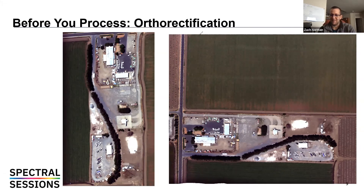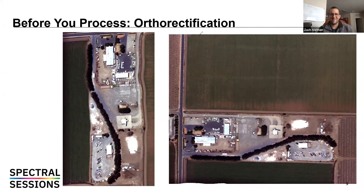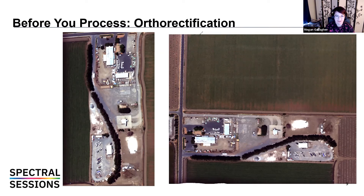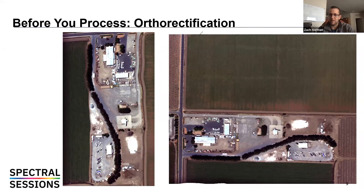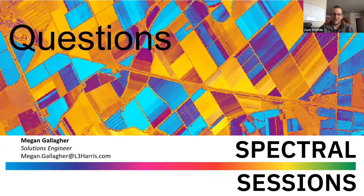Last question: if you get data that is already atmospherically corrected, do you need to redo that pre-processing step? The first thing to ask is: where did they stop in the atmospheric correction — at radiance, top of atmosphere, or surface reflectance? If it's already at surface reflectance, that's perfectly good to use in your processing. You can double-check by clicking a single point and viewing the spectrum. If it's been pre-processed to surface reflectance, you're good to go. Thank you again Megan for taking the time to present today.